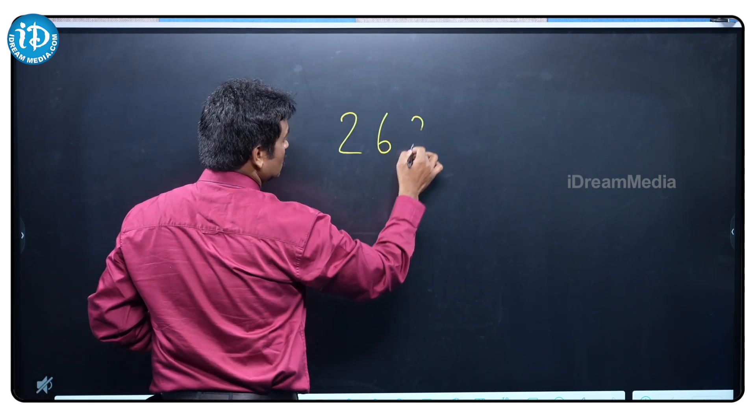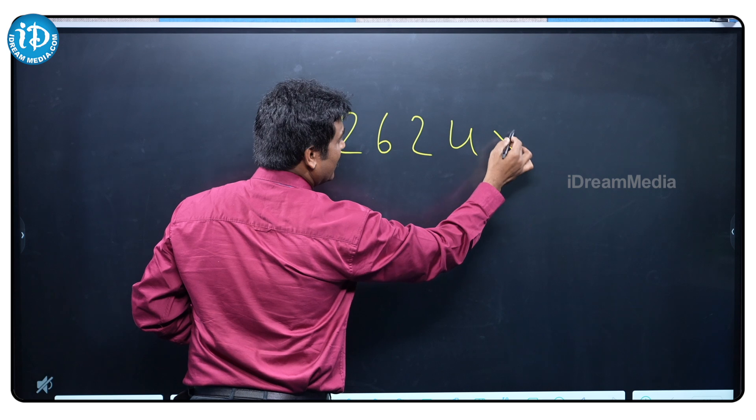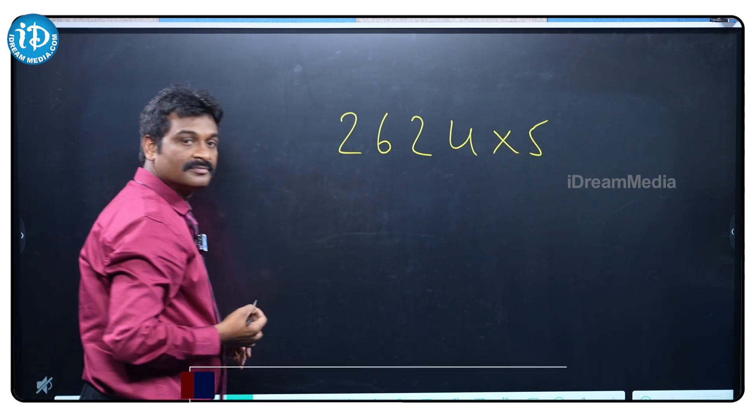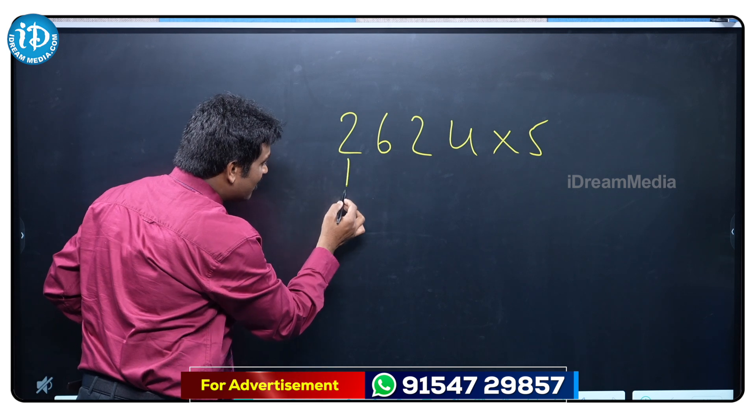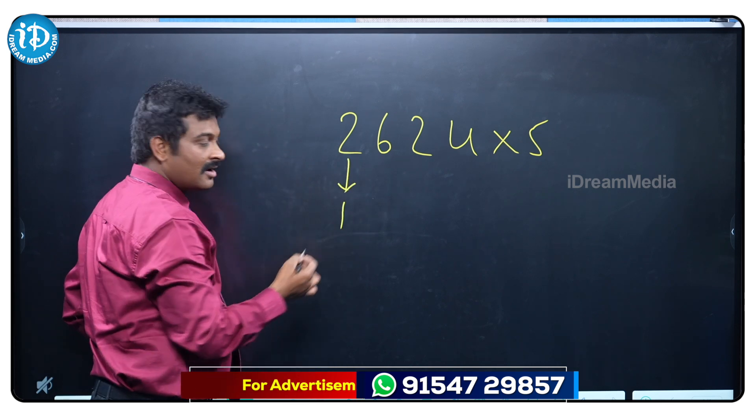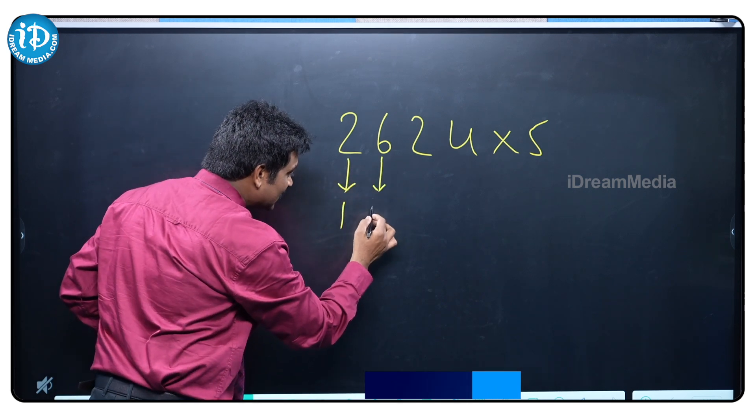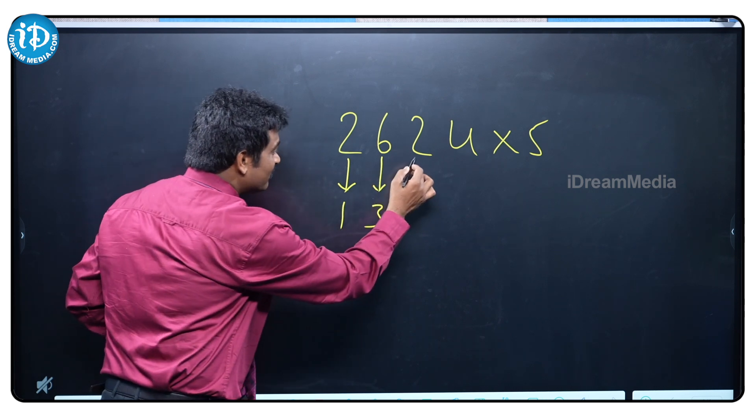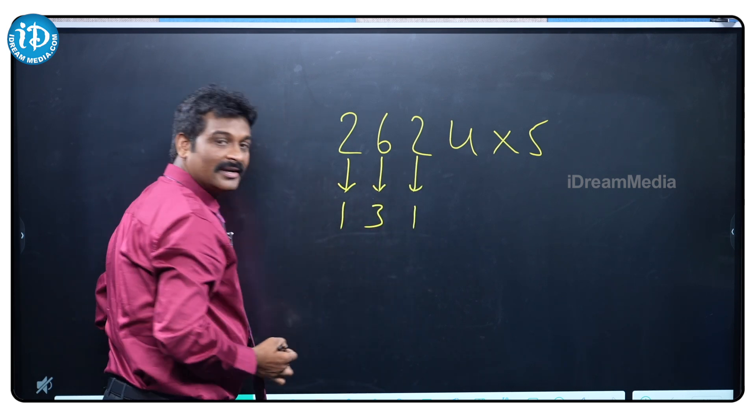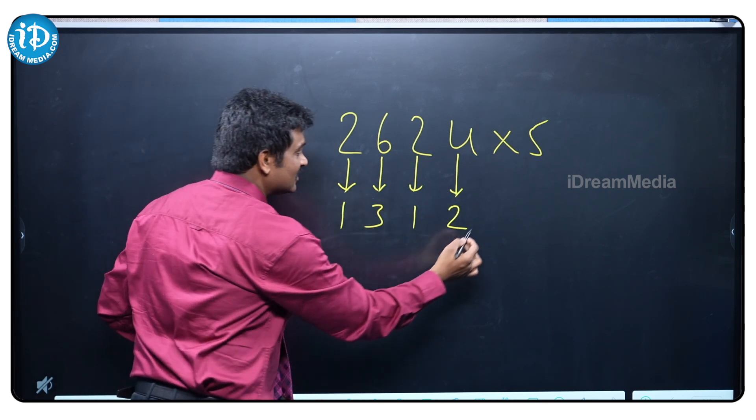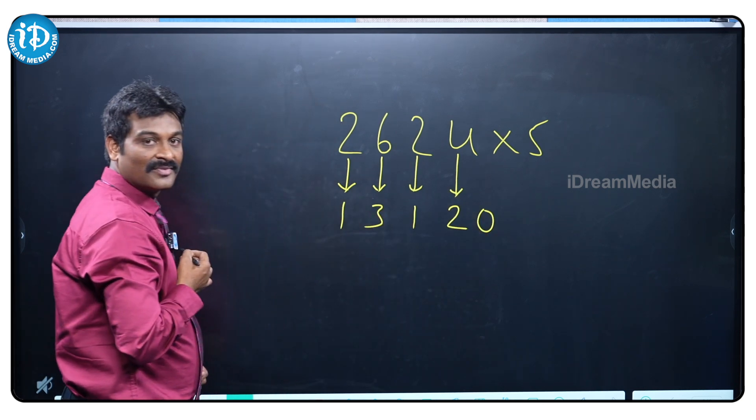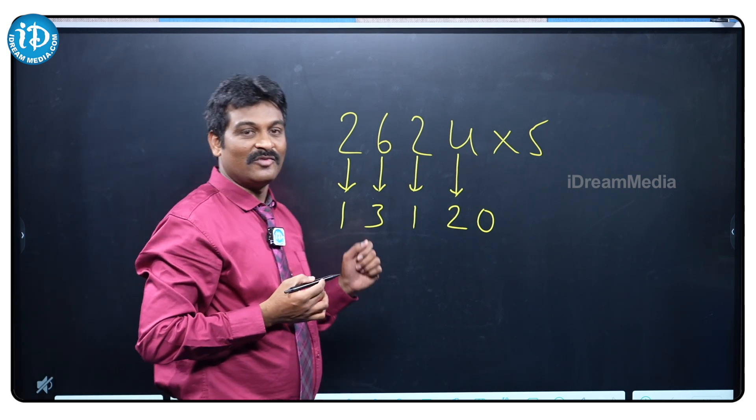2624 into 5, how to do this? Same technique. What is the half of 2? 1. Half of 6 is 3, half of 2 is 1, half of 4 is 2. Attach a 0.